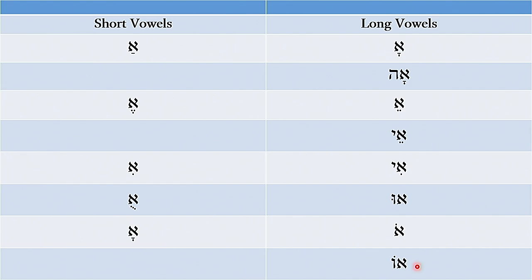By now you've likely recognized that there are at least two vowels that look exactly the same: the kamatz chatuf and the vowel kamatz. One is pronounced 'o' like whole, and the other we learned is pronounced 'a' like father — and they look exactly the same. How do you know how to pronounce it? We're going to learn the differences in a future lesson. We'll have specific instructions on how to distinguish between the vowels and between the words. But for now, you can just know that there is a difference, even though they look the same.